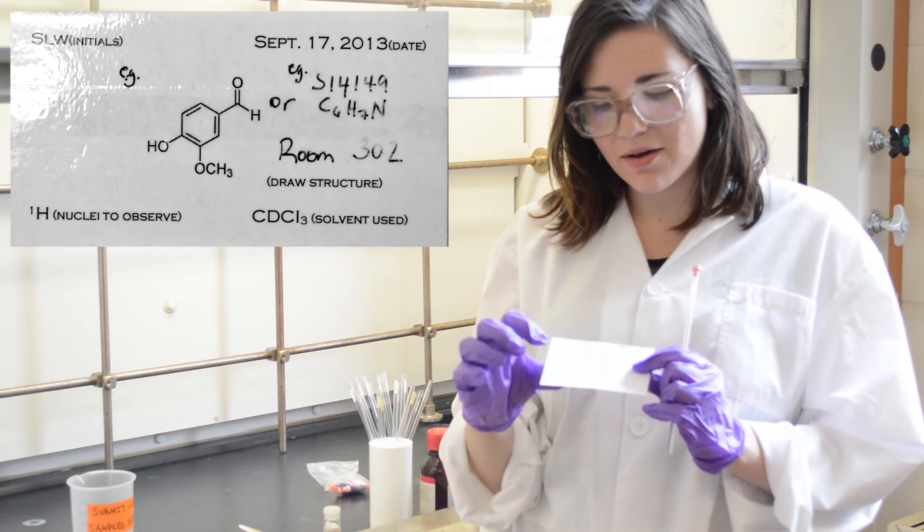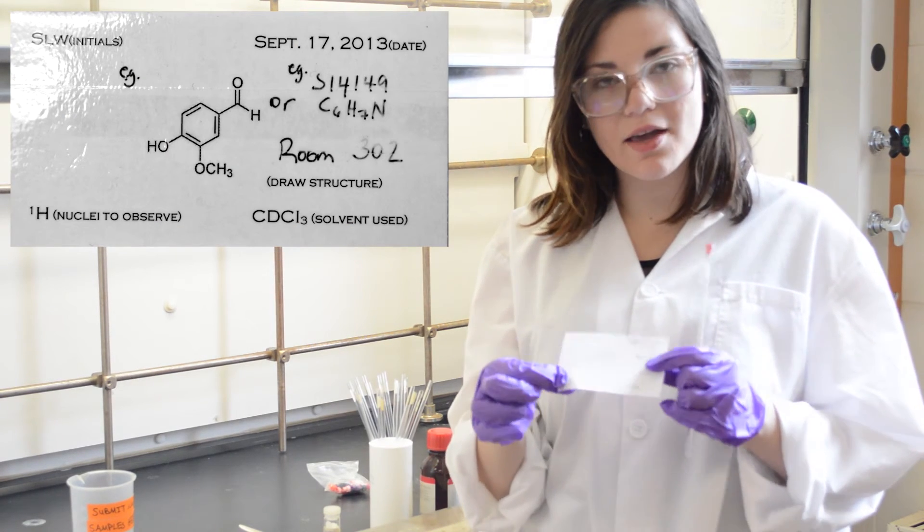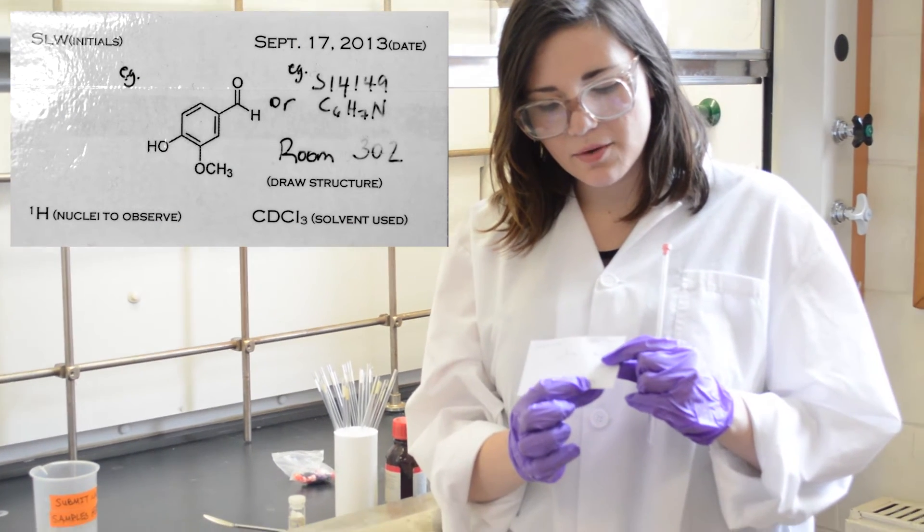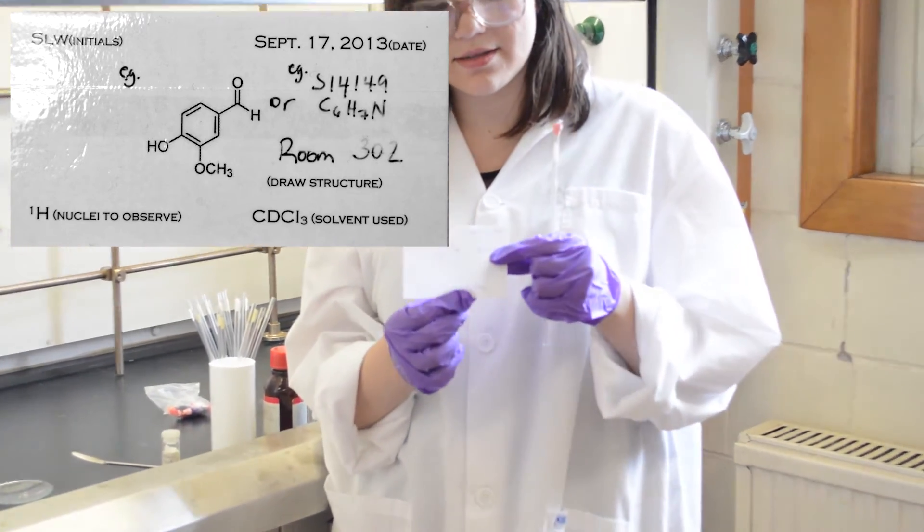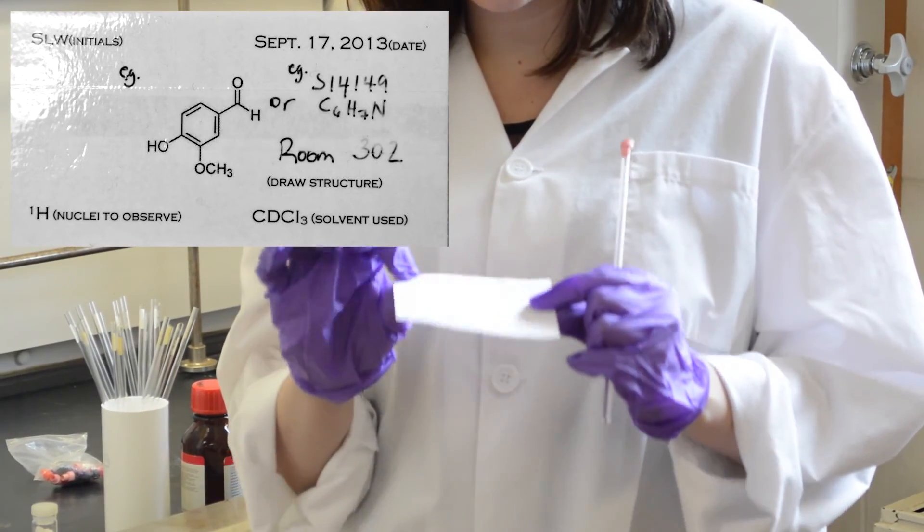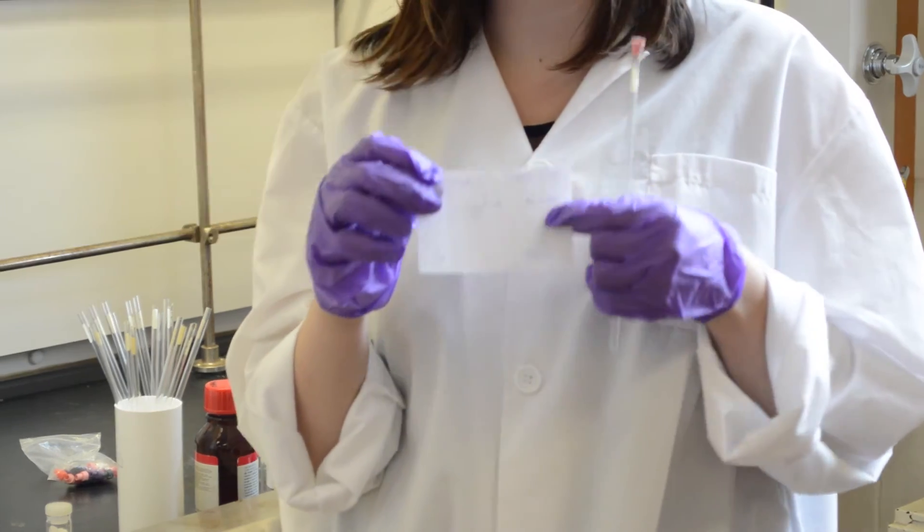Include a drawing of your compound, the type of nuclei you want to observe, the solvent in which it is placed—this deuterated solvent is chloroform—the date, as well as your initials, so that it can be returned to you.